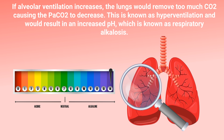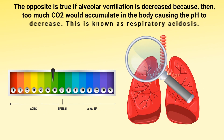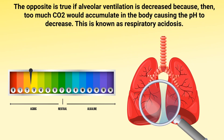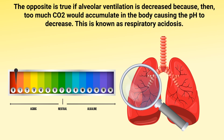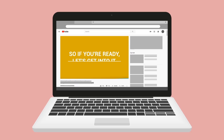This is known as hyperventilation and would result in an increased pH, which is known as respiratory alkalosis. The opposite is true if alveolar ventilation is decreased, because then too much CO2 would accumulate in the body, causing the pH to decrease. This is known as respiratory acidosis.